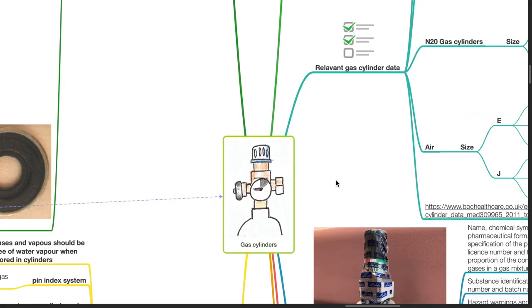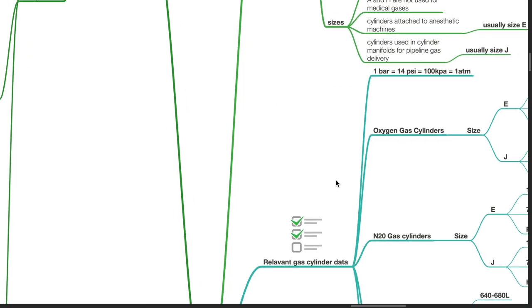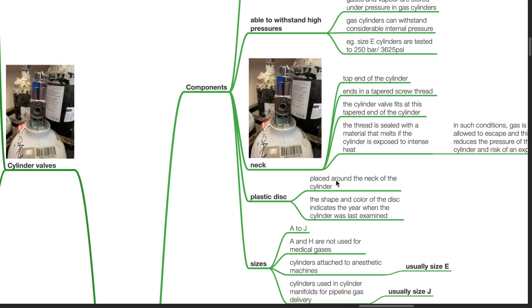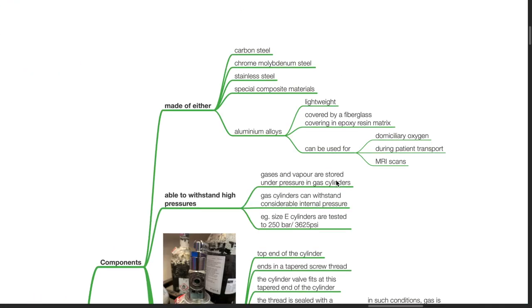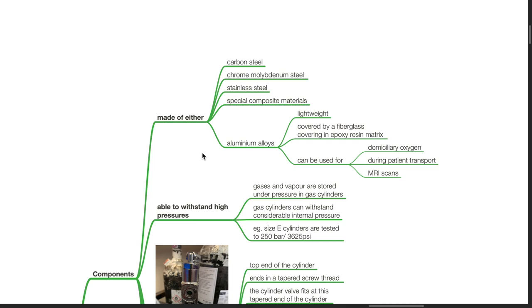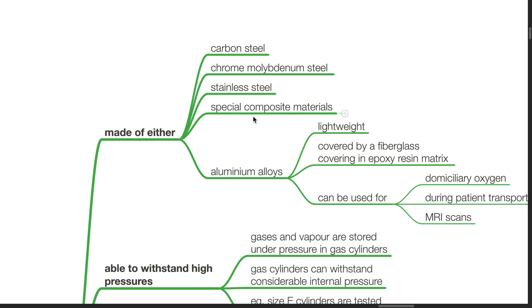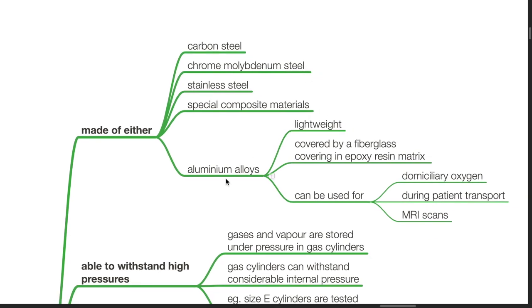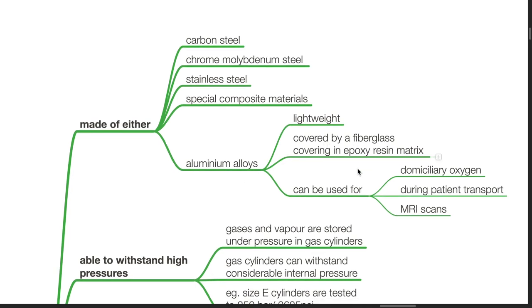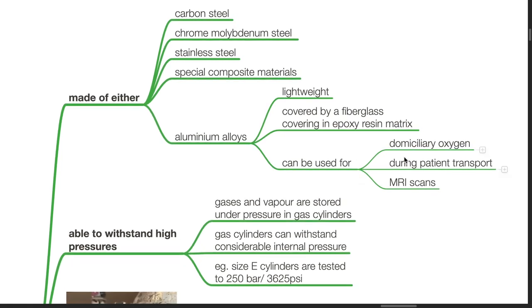Gas Cylinders: Components of a Gas Cylinder. Gas Cylinders are made of either carbon steel, chrome molybdenum steel, stainless steel, special composite materials, or aluminum alloys. Aluminum alloys are lightweight, covered by a fiberglass covering in epoxy resin matrix, and can be used for domiciliary oxygen during patient transport and in MRI scans.